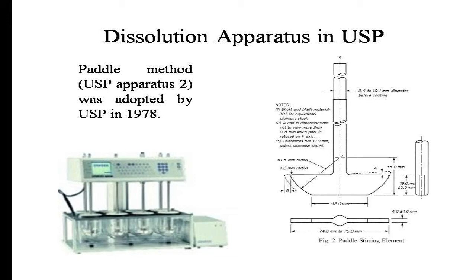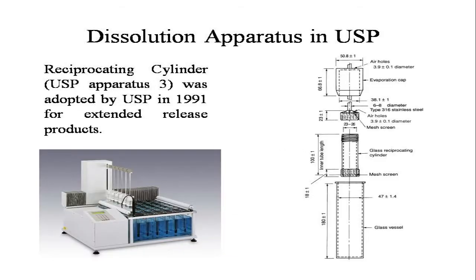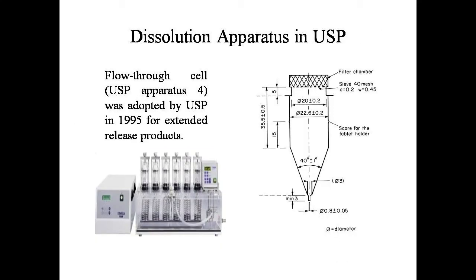The next apparatus is the reciprocating cylinder, USP Apparatus 3, adopted by USP in 1991 for extended release products. This is followed by the flow-through cell, USP Apparatus 4, adopted by USP in 1995 for extended release products.